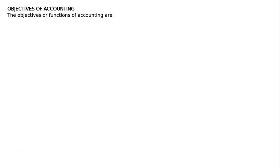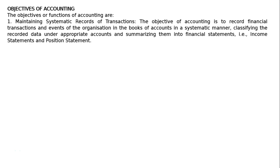Objectives of Accounting. The objectives or functions of accounting are: first, maintaining systematic records of transactions. The objective of accounting is to record financial transactions and events of the organization in the books of accounts in a systematic manner, classifying the recorded data under appropriate accounts and summarizing them into financial statements, for example income statements and position statements.